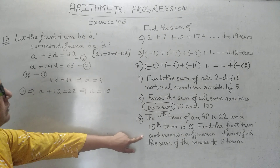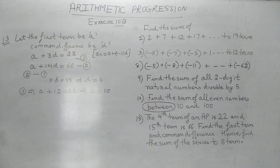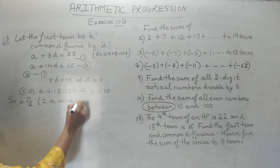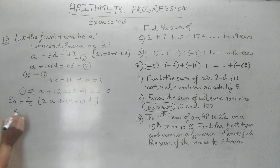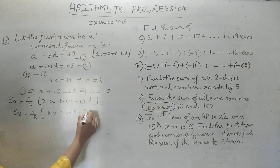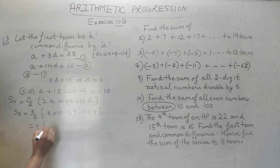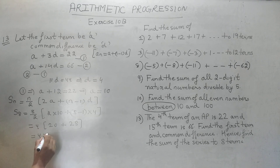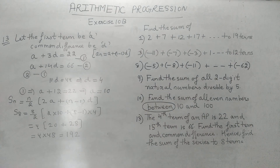Now the next part: find the sum of the first 8 terms. Using the formula Sn = n/2 × [2A + (n−1)D], we substitute n = 8, A = 10, D = 4: S8 = 8/2 × [2×10 + 7×4] = 4 × [20 + 28] = 4 × 48 = 192. So quite simply we have calculated the first term, common difference, and hence the sum of the first 8 terms.